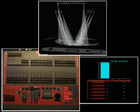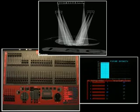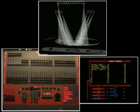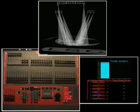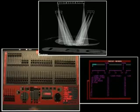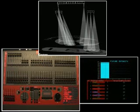Press preset Center Stage — again, all fixtures move because this preset was stored with fixtures focused to center stage. Press Group: Right Track Spots. Now only the right track spots are highlighted. Press preset Downstage; this time the same downstage preset only affected the right track spots.